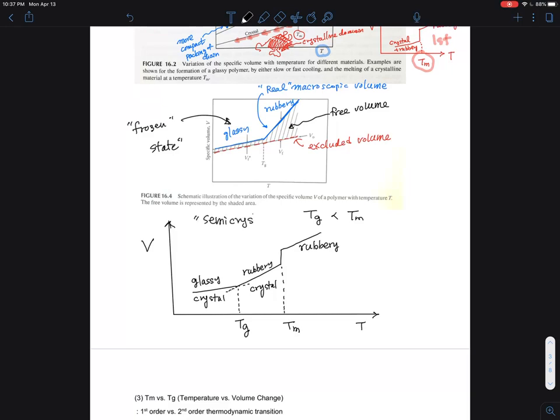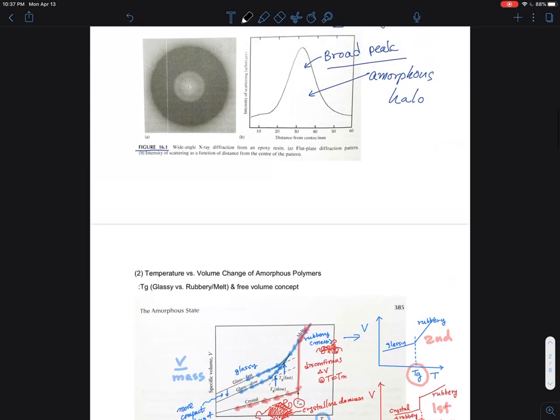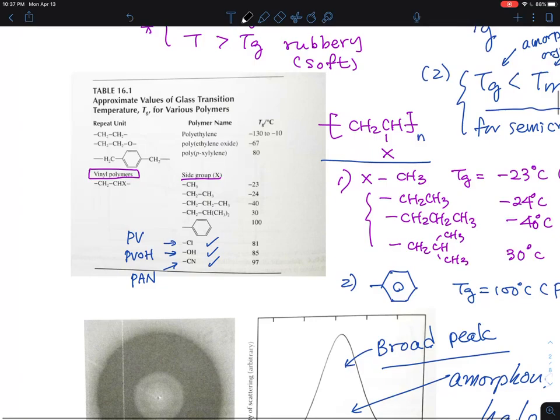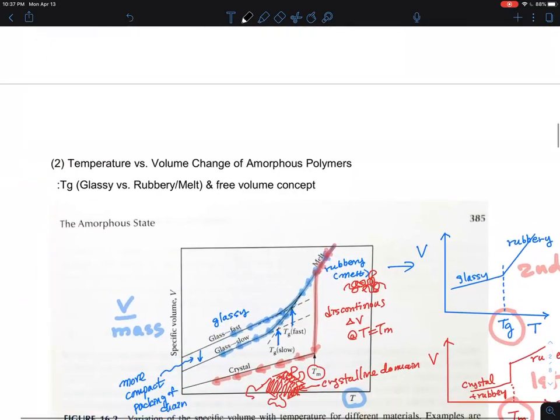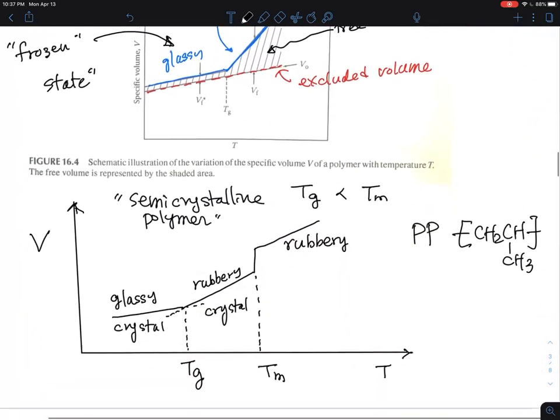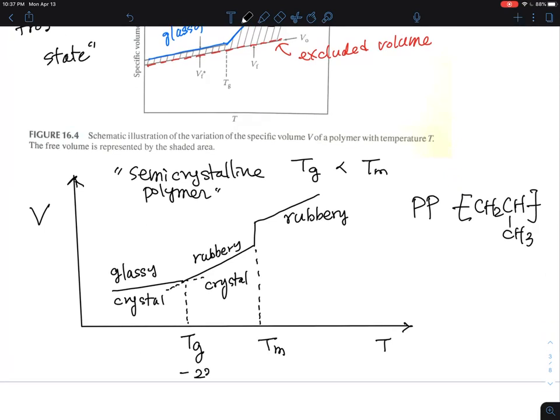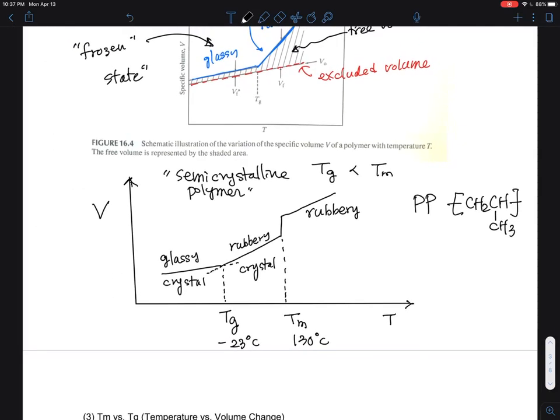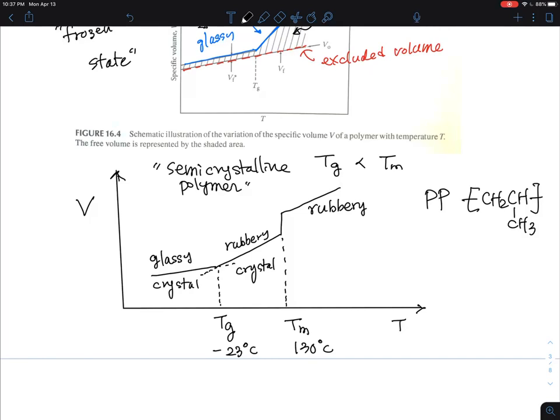A good example is polypropylene, CH2C-CH3. If you go back to the first section, polypropylene has a Tg of minus 23 degrees Celsius and the melting temperature is about 130 degrees Celsius. This is just a physical concept about how the volume changes.